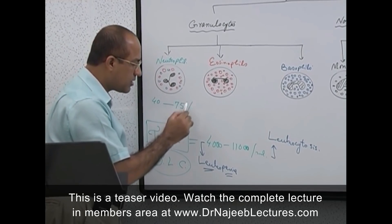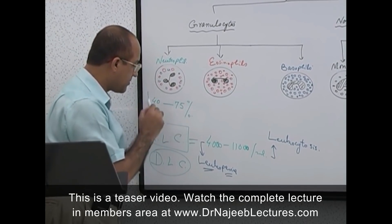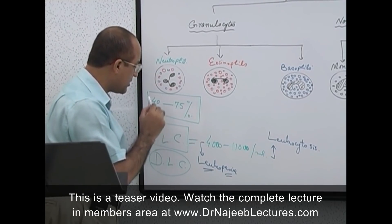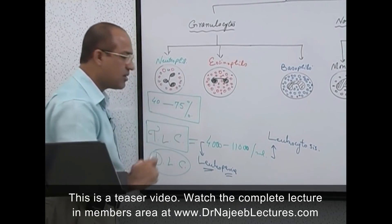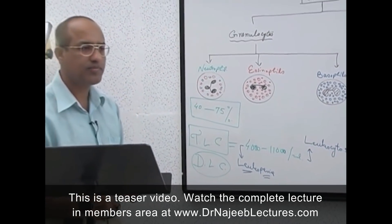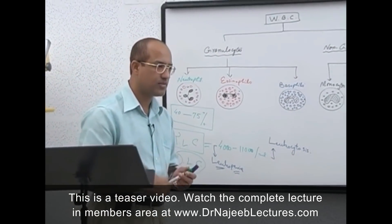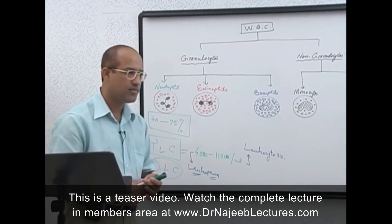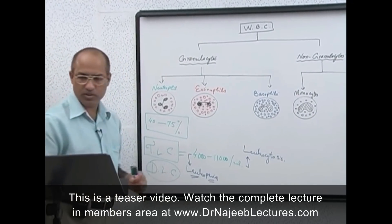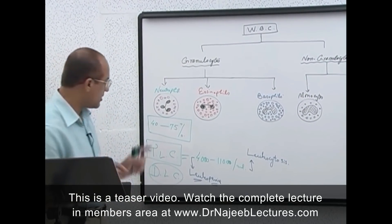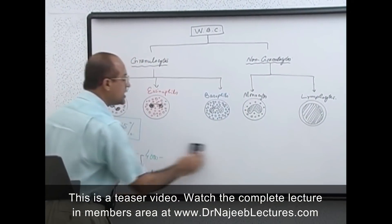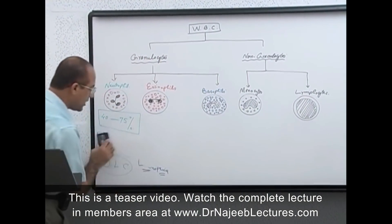In a normal person's blood, the neutrophil percentage in the DLC is somewhere between 40 to 75 percent. Neutrophil count should not be less than 40 percent and not more than 75 percent.